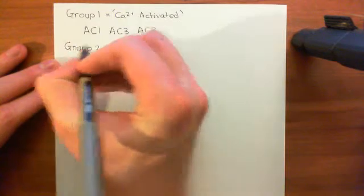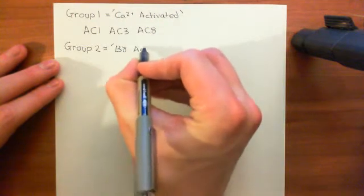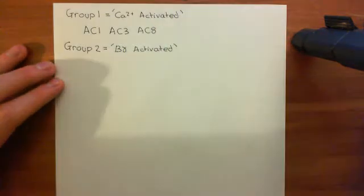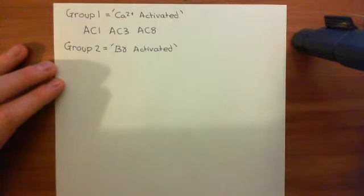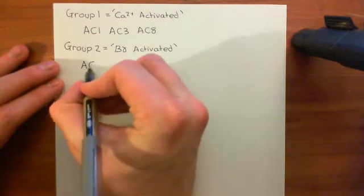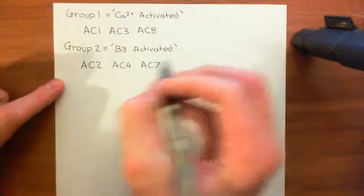Group two contains another three adenylyl cyclases, and its colloquial name is beta-gamma-activated. These can actually be activated by the beta-gamma subunits, but only if the adenylyl cyclase has already been activated by an alpha-S subunit. The beta-gamma subunit can't activate adenylyl cyclases on its own — it can only potentiate activation already produced by a G-alpha-S subunit. The adenylyl cyclases in group two are adenylyl cyclase 2, adenylyl cyclase 4, and adenylyl cyclase 7.